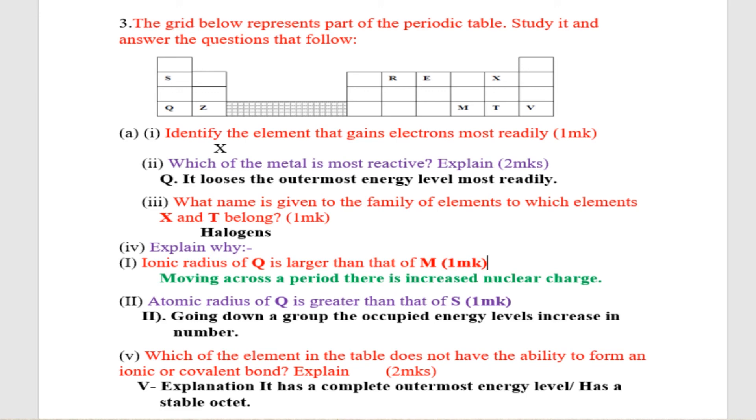(v) Which element in the table does not have the ability to form an ionic bond? Explain. That one is V, because it has a complete outermost energy level.